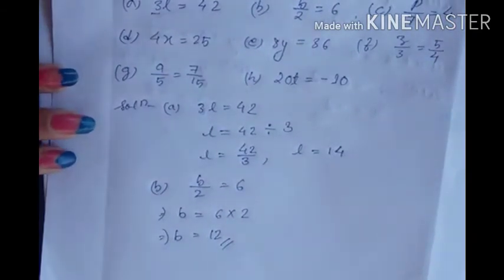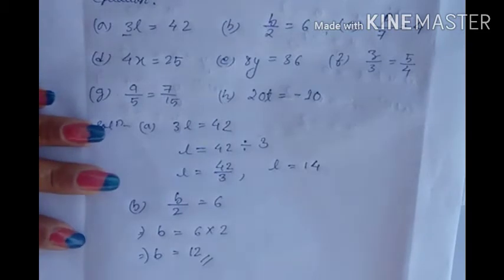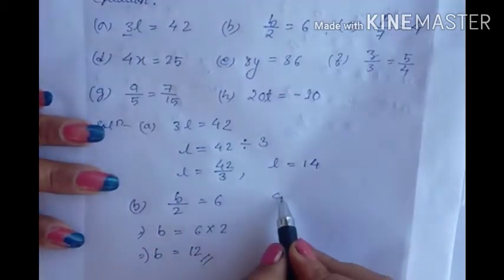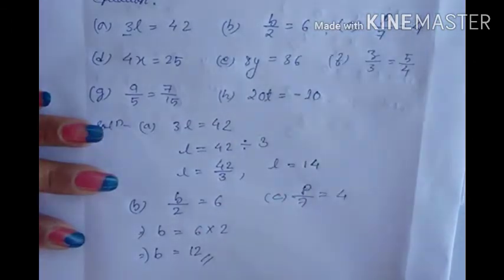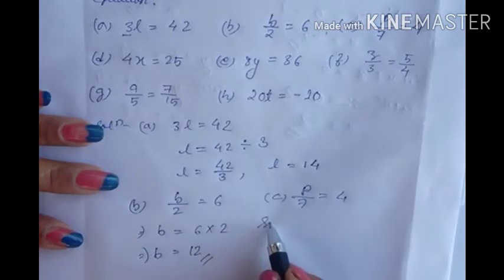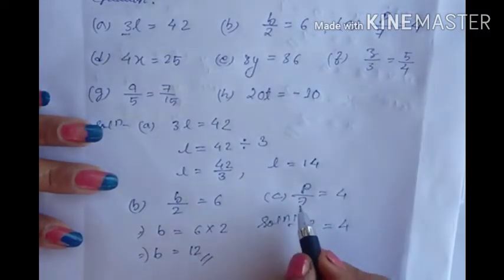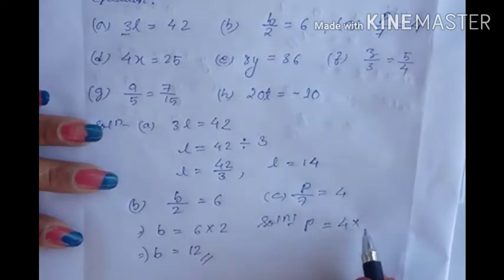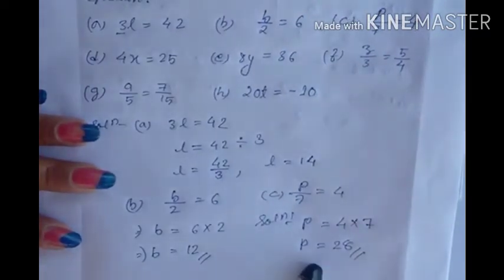Question C: P upon 7 equals 4. We need only the variable here. Since 7 is dividing on the left, it becomes multiply on the right hand side. So P equals 4 into 7, which equals 28. The value of P is 28.